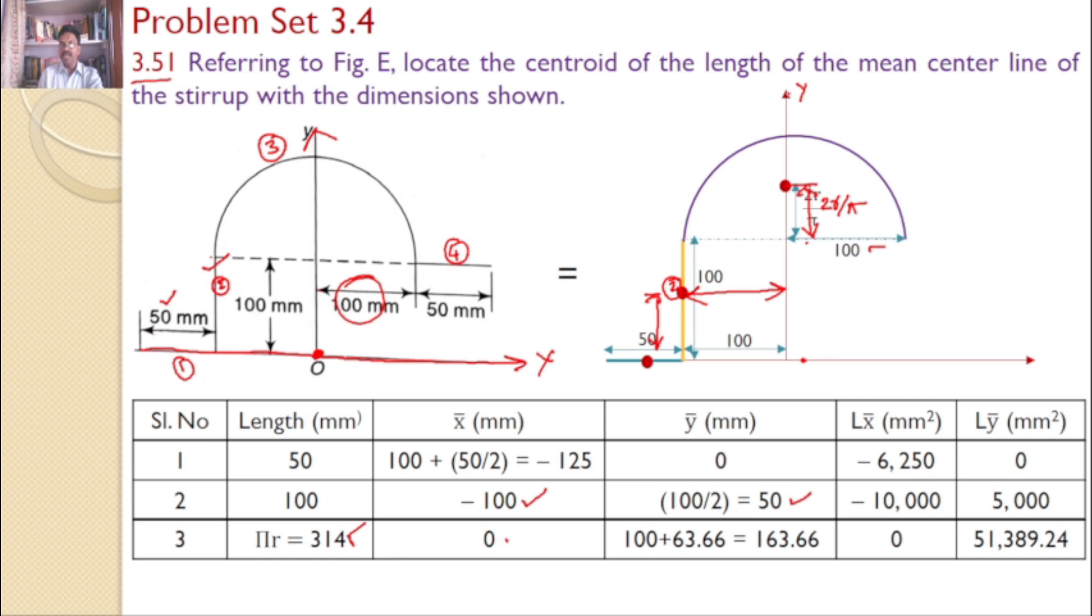The x-coordinate is 0 because it lies on the y-axis. The y-coordinate equals 100 plus 2r by π. 2r by π equals 2 times 50 divided by π, which gives 63.66. So 100 plus 63.66 equals 163.66. Therefore, Lx-bar equals 0 and Ly-bar equals 51,389.24.